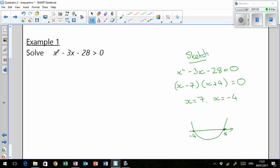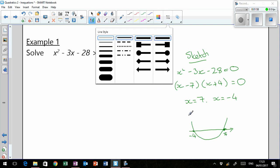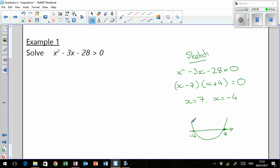We want to know when that quadratic is greater than zero. It's above zero at that point there and at that point there. So, our solution for that quadratic is that x can be anything less than negative four and x can be anything greater than seven, because those are the areas that are above the x-axis. And that's your solution.